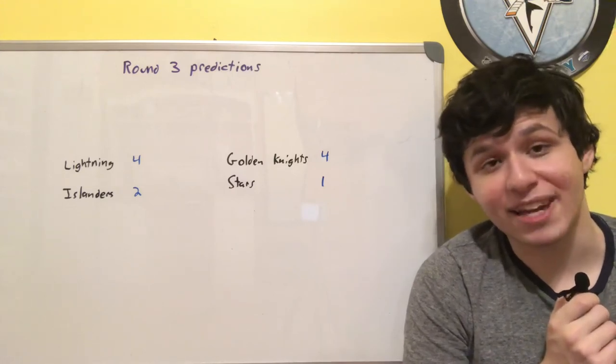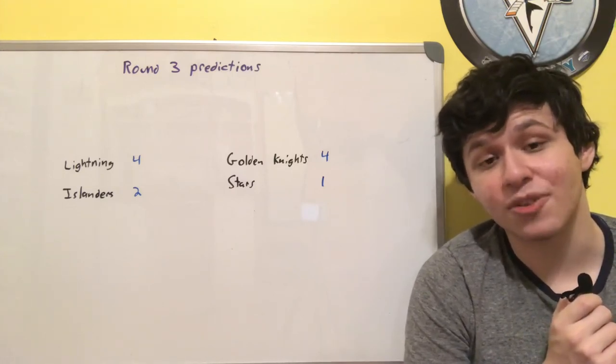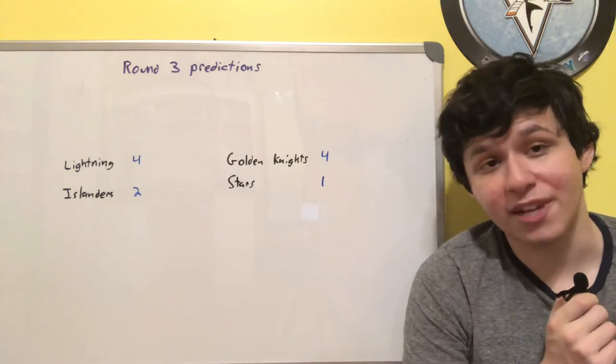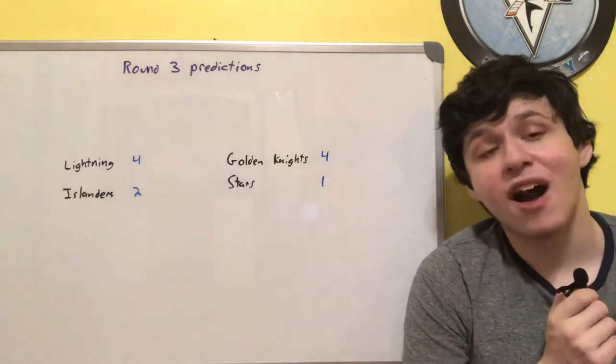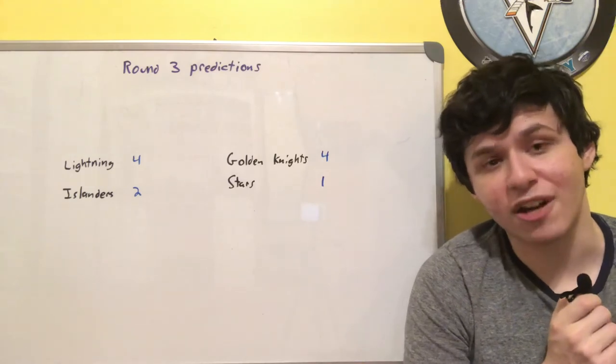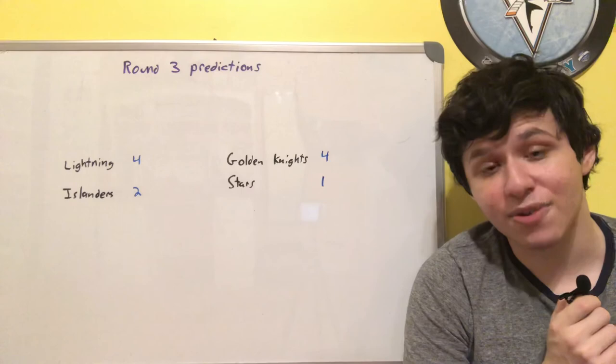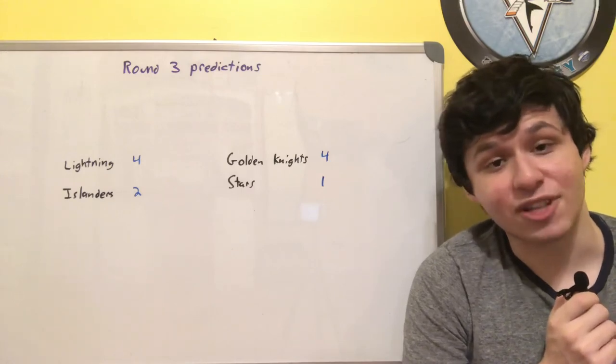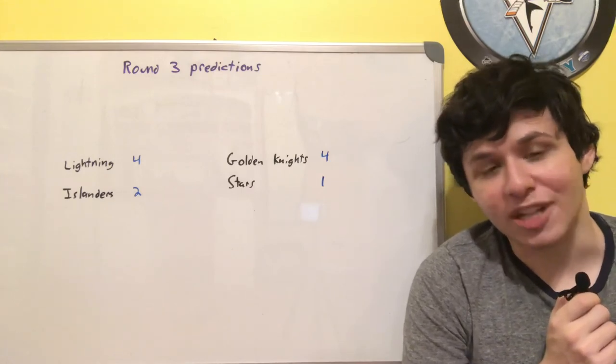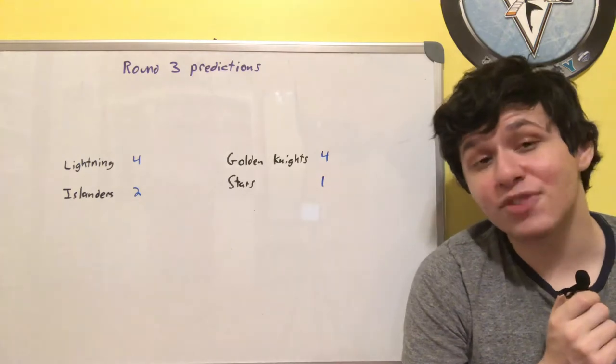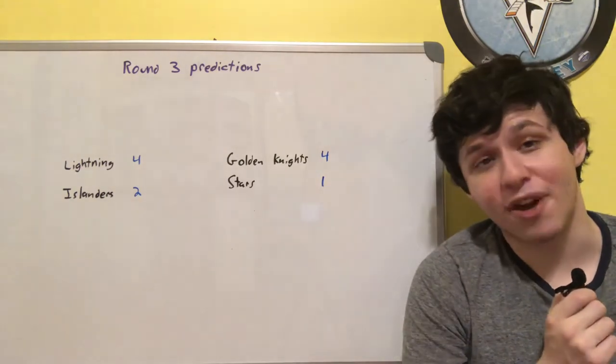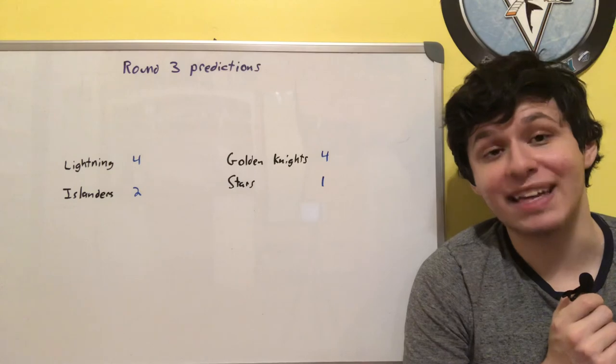So the Stars offense which was looking great during this second round might have a lot more trouble against the Golden Knights, not only because of the goaltending on the Golden Knights side but also because of a much stronger defense. We saw them really shut down the Canucks. Three of the four games that they actually won last series were shutouts for the Golden Knights. This defense looking great, this goaltending looking great, and there isn't even that much of a drop-off from the Avalanche offense to the Golden Knights offense, which is why I think they'll take it in five games.